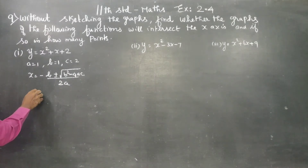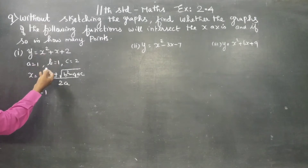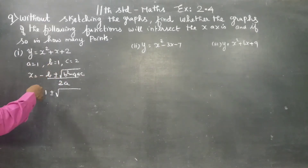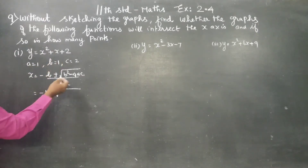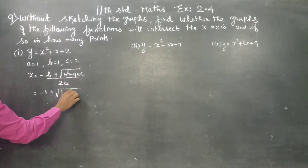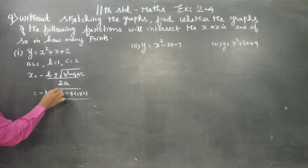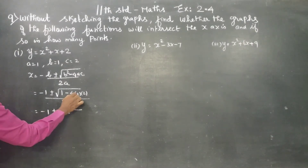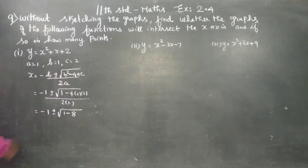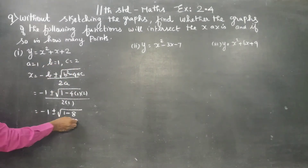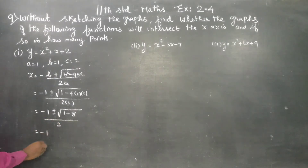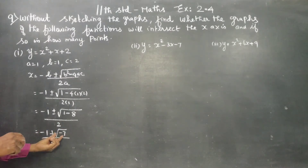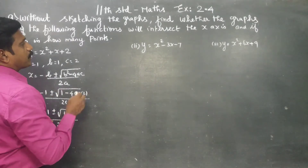Substituting: minus 1 plus or minus square root of 1 squared minus 4 into 1 into 2, by 2 into 1. This gives minus 1 plus or minus square root of 1 minus 8, by 2, which equals minus 1 plus or minus square root of minus 7, by 2. The roots are imaginary.